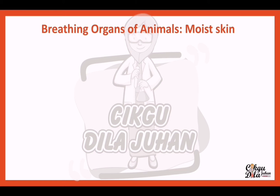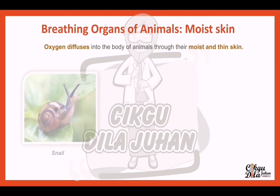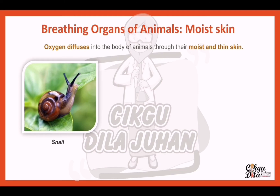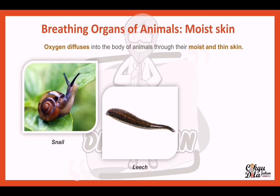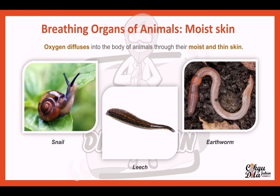The next breathing organ is moist skin. Oxygen diffuses into the body of animals through their moist and thin skin. Examples include snail, leech, and earthworm.